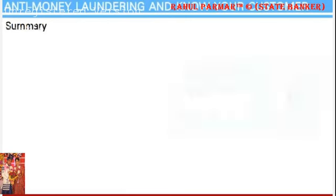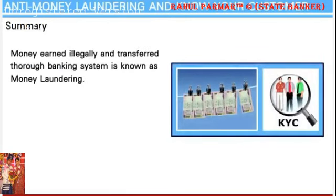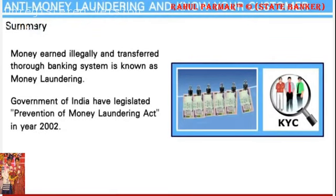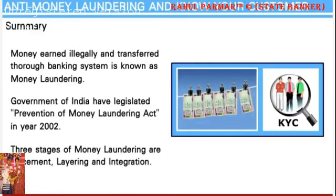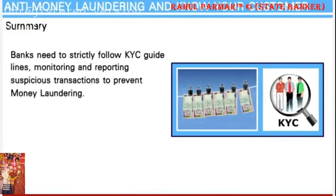Summary: Money earned illegally and transferred through the banking system is known as money laundering. The Government of India legislated the Prevention of Money Laundering Act in 2002. The three stages of money laundering are placement, layering, and integration. Banks need to strictly follow KYC guidelines, monitor and report suspicious transactions to prevent money laundering.